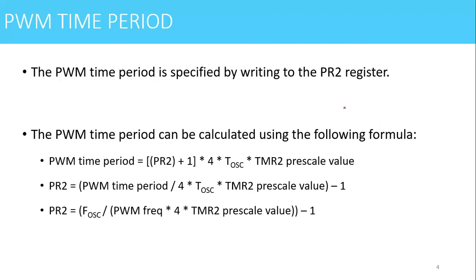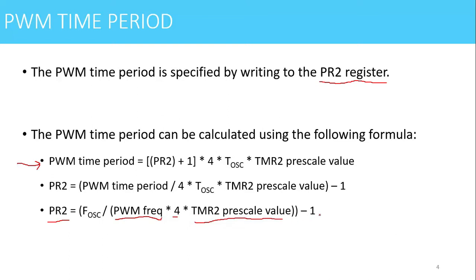The time period of the PWM signal is decided by the value stored in the PR2 register. The formula available in the datasheet of PIC16F877 gives us: PR2 = (F_oscillator / (PWM_frequency × 4 × Timer2_prescaler)) − 1, where F_oscillator is the crystal frequency connected to our circuit. This gives us the value of the PR2 register, which is an 8-bit register.